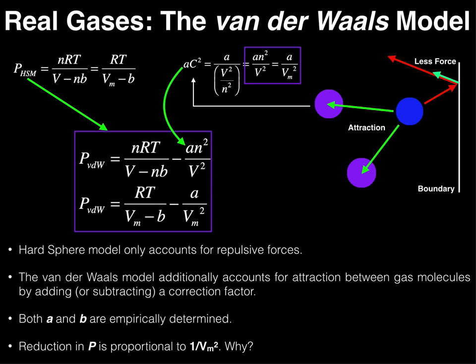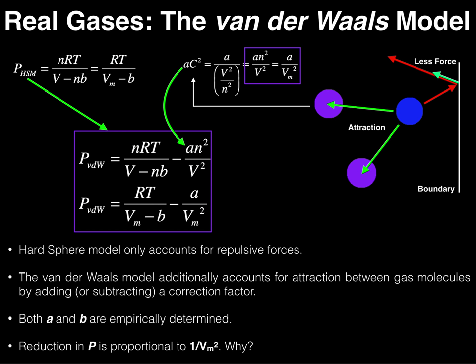We also did some practice problems in the following video. Now we're going to do an extension of the hard shell model — this is what's called the van der Waals equation of state or the van der Waals model. Here I have the hard shell model rewritten. It was nRT divided by the quantity V minus nB, where the denominator is the lowered effective volume. We can also divide through both the top and the bottom by n to get this in terms of molar quantities, where the hard shell model pressure is RT divided by the quantity molar volume minus b.